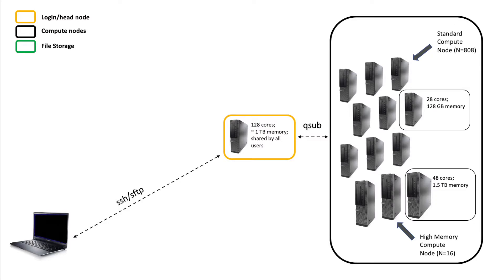We previously looked at this depiction of the Owens supercomputer at OSC as an example of a high-performance compute system. The bottom left highlights a connection you make between your local computer and that remote system. In videos to this point, we've focused on SSH as a way to connect, in which the environment inside your terminal window becomes that of the remote computer. Think of it as a one-way connection, in which you're working exclusively on that remote computer.